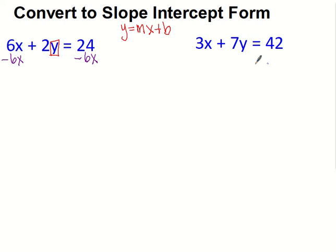And then we will be left with our 2Y equals, and then these cannot be put together. X can't be put together, so negative 6X plus 24. And I just did that so that it looks similar to my Y intercept original form.